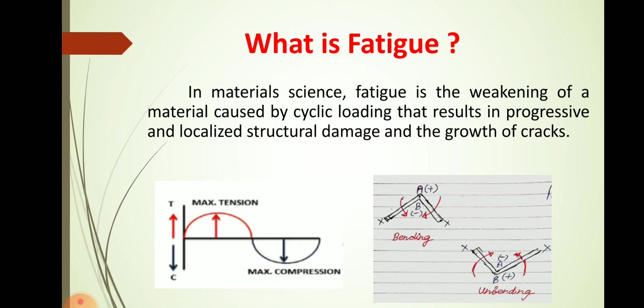Consider a small example of a metallic wire. If you want to break that wire, you do not apply tensile or compressive load directly — you simply bend and unbend the wire, applying cyclic compression and tensile load continuously, so that it breaks within very short effort. That is nothing but a fatigue load or cyclic load, and the resulting failure is called fatigue failure.